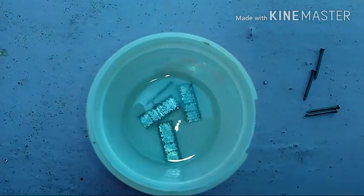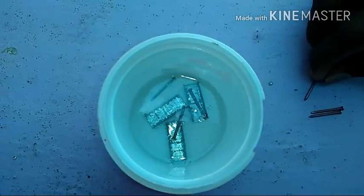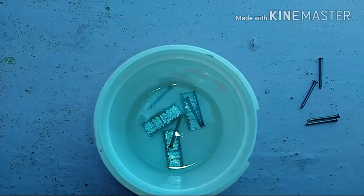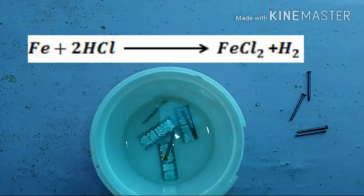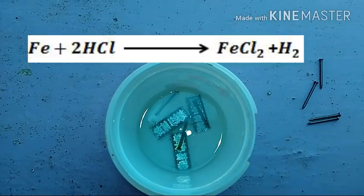When we add iron pieces into the hydrochloric acid, iron reacts with hydrochloric acid and liberates hydrogen gas, forming ferrous chloride solution, FeCl2.